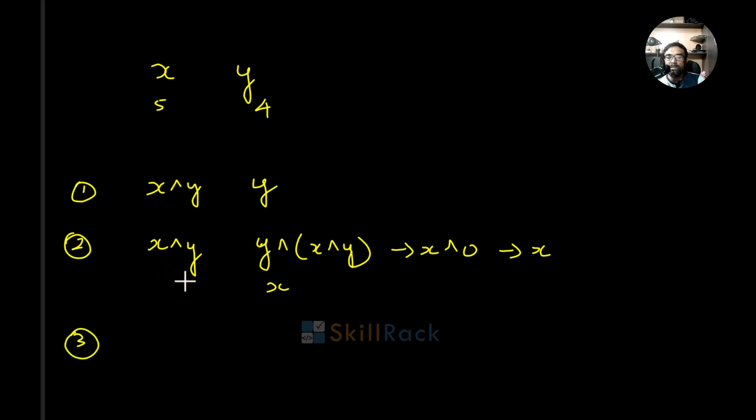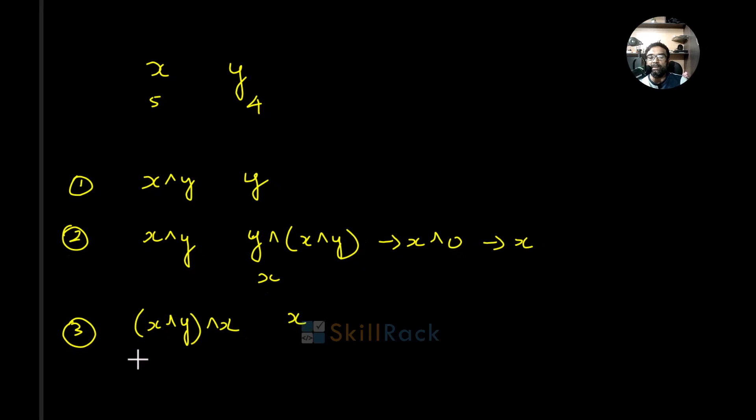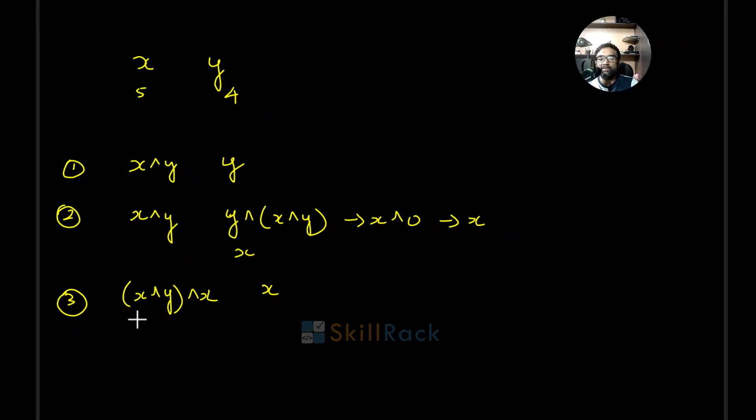In the third step you are going to XOR X and Y. So X is currently containing X XOR Y, and you XOR it with Y which has X. Now X XOR X will cancel to 0 XOR Y which is nothing but Y. And in Y the value X will be there.